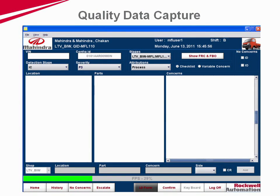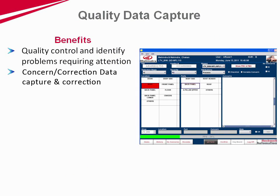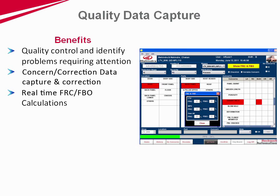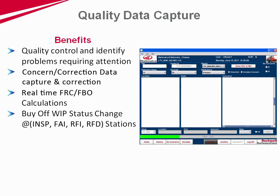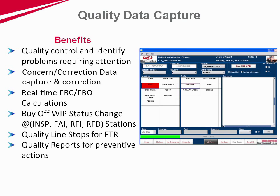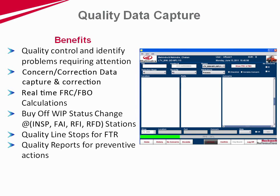MES enables quality data capture, analysis and real-time display. The operator scans the vehicle or aggregate barcode ID at quality buy-off stations. The system verifies platform-wise checklists and previous concern history, if any, prior to the operator capturing concerns by inspection of the vehicle or part at the station.